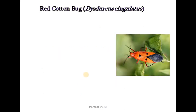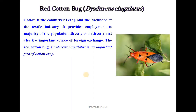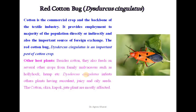The next important insect pest is the red cotton bug. The scientific name is Dysdercus singulatus. Cotton is the commercial crop and the backbone of the textile industry. It provides employment to the majority of the population directly or indirectly and is also an important source of foreign exchange. Dysdercus singulatus is an important pest of cotton crop. Besides cotton, they also feed on several crops from family Malvaceae such as hollyhock, hemp, etc.